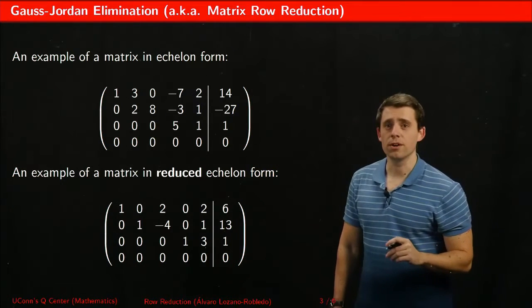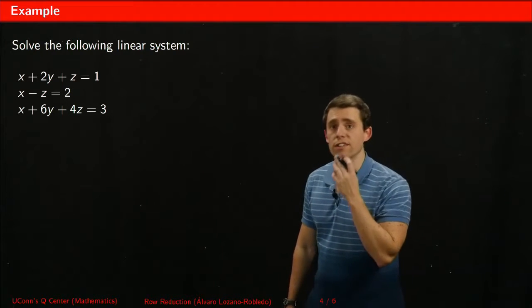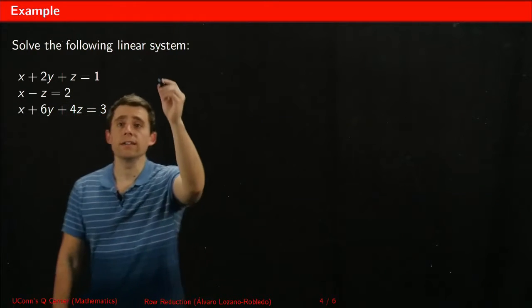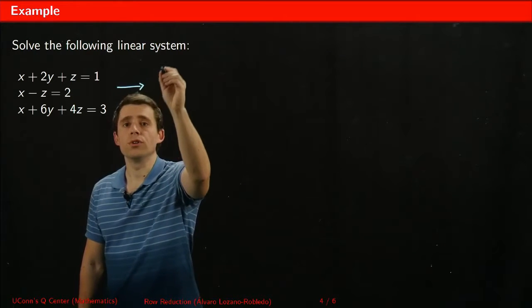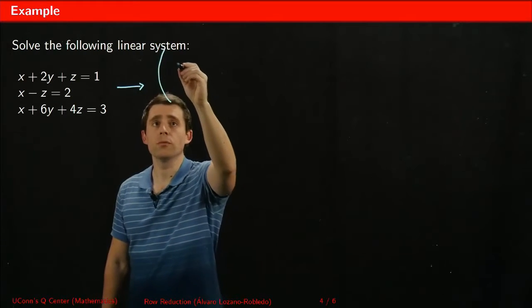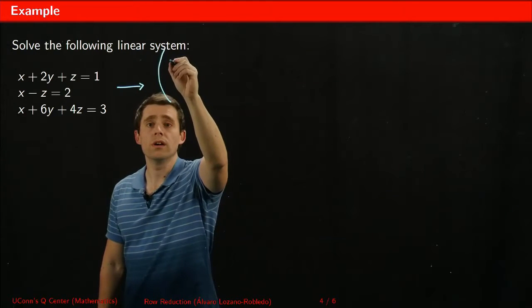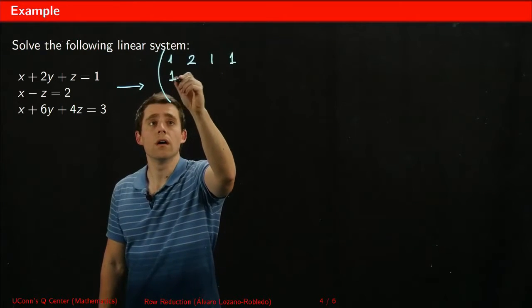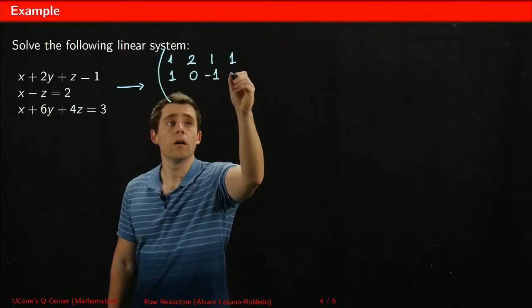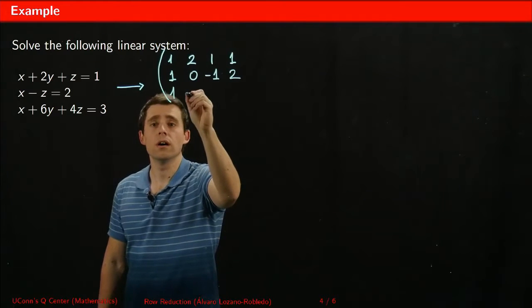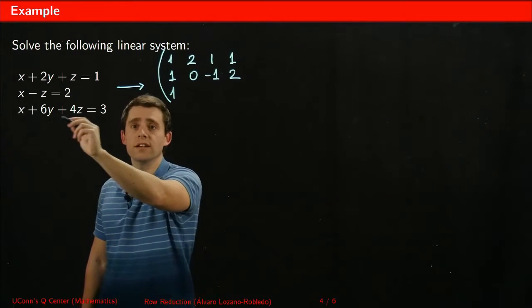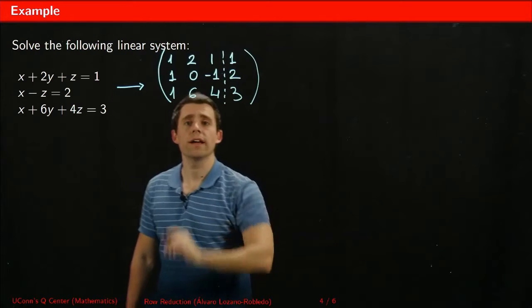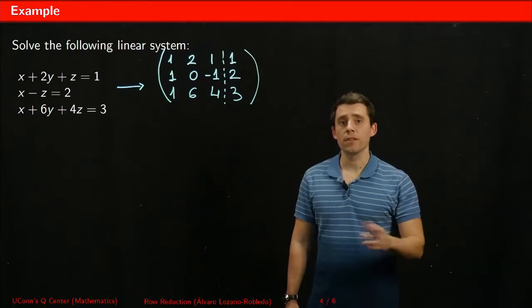This is better explained by example, so let's try to solve a few linear systems. The very first step is to produce the augmented matrix. We write the coefficients of the system — for instance, the coefficients of the last line are 1, 6, 4, 3, and that's what we copy down as a row. That's the augmented matrix for the system, and this is what we're going to row reduce.